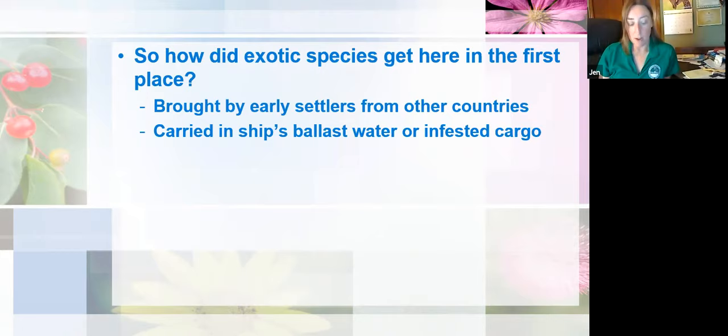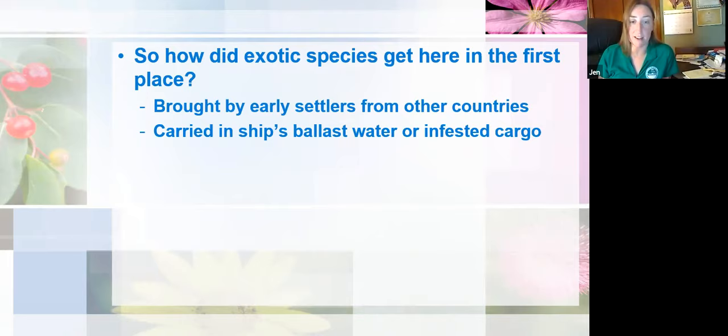In the U.S., two federal agencies are supposed to regulate ballast water discharges: the U.S. Coast Guard and the EPA. But it wasn't until March of 2012 that the U.S. Coast Guard finally published a rule to establish a federal ballast water treatment standard, and that's only for vessels operating here in the United States. As you can imagine, this is a serious problem with regards to unintentional introductions of invasive species.